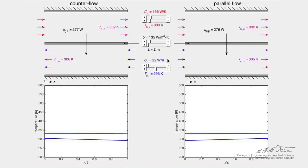Adjust the hot fluid inlet temperature T sub h i, the cold fluid inlet temperature T sub c i, the overall heat transfer coefficient capital U, the length of the heat exchanger capital L, the hot fluid heat capacity rate capital C sub h, and the cold fluid heat capacity rate C sub c, using the slider bars.